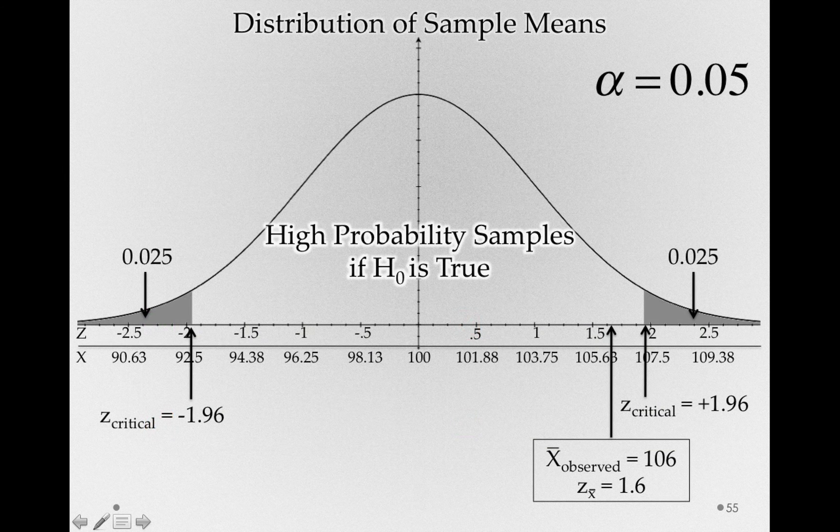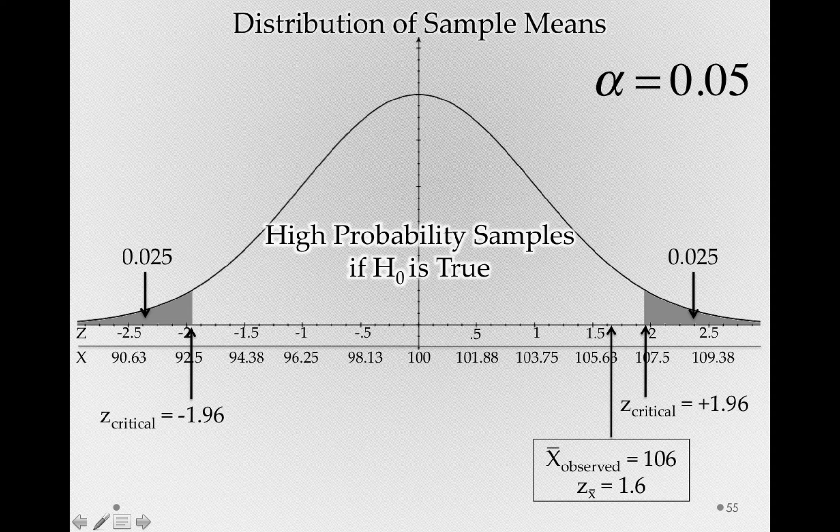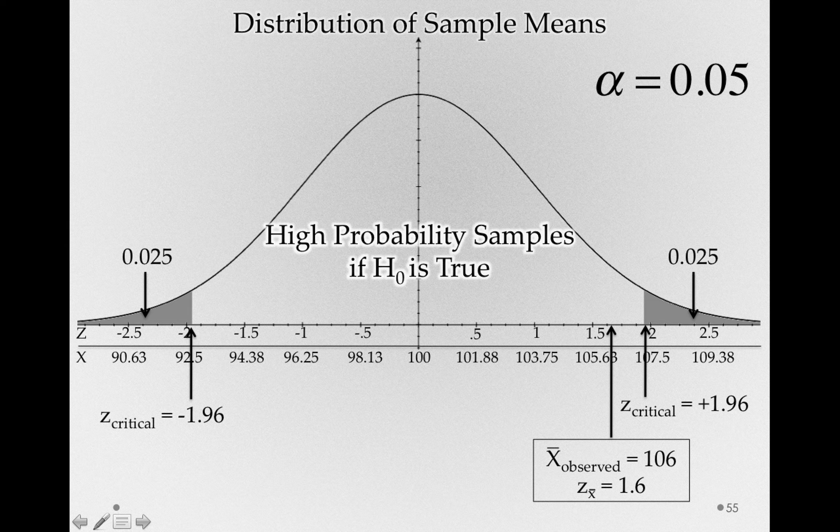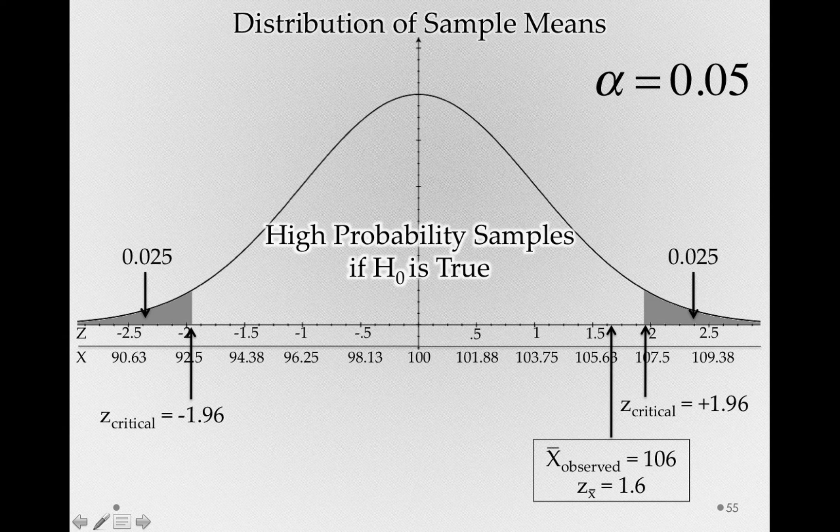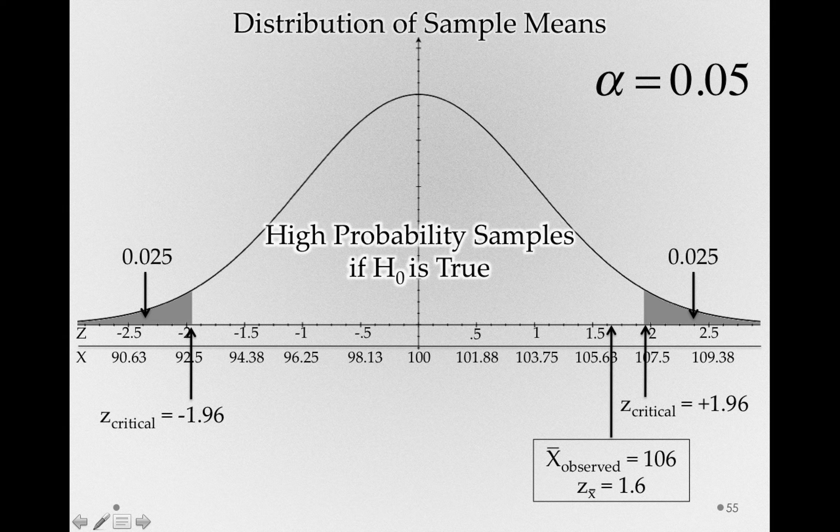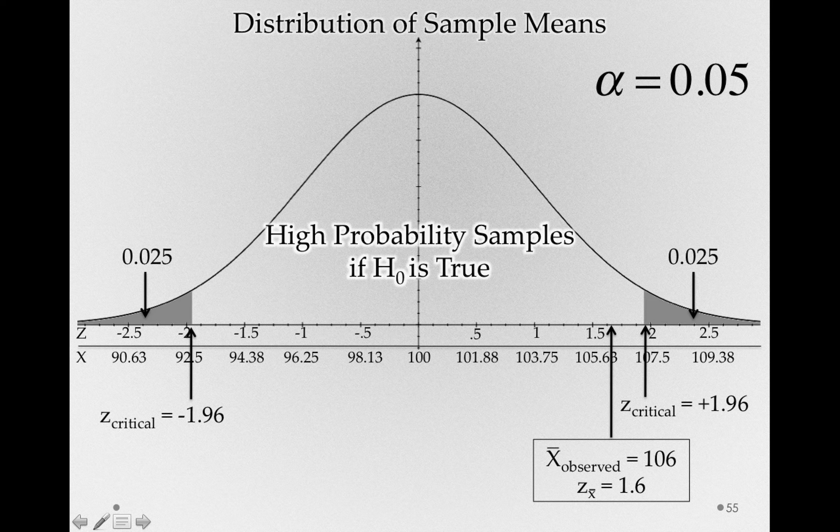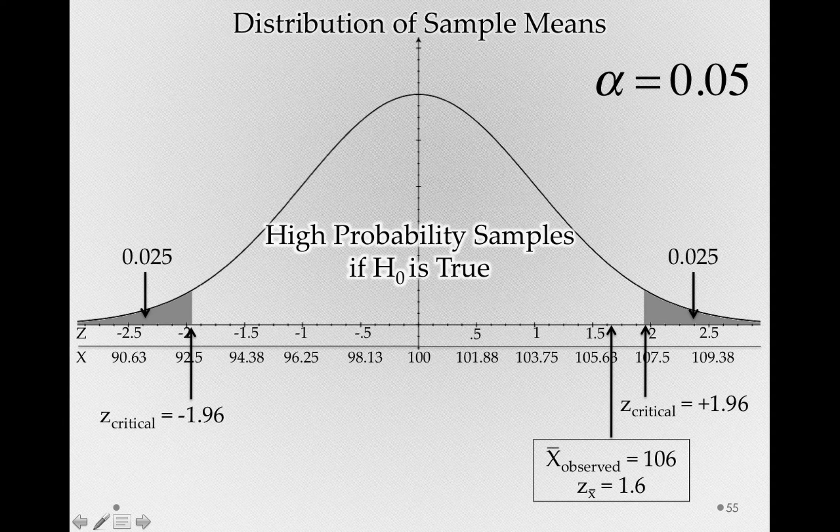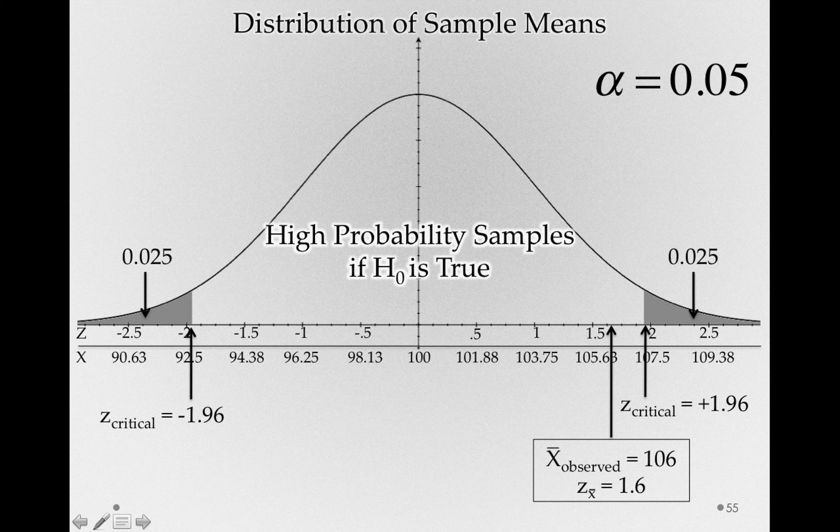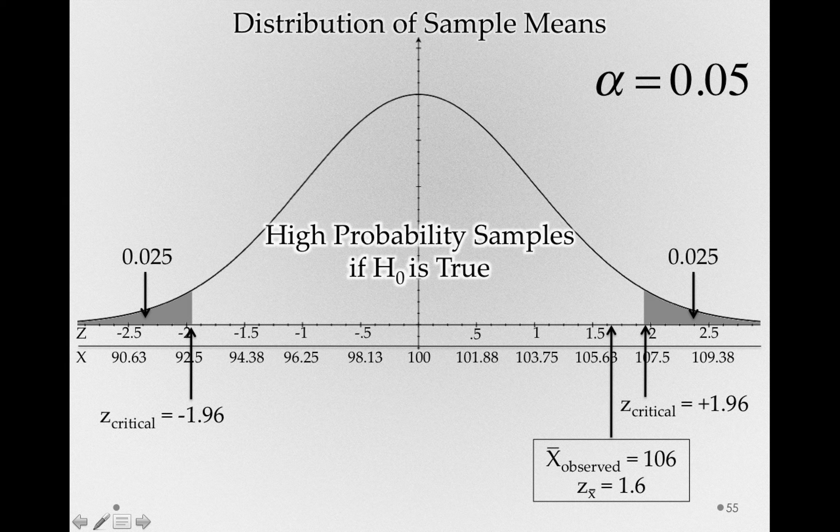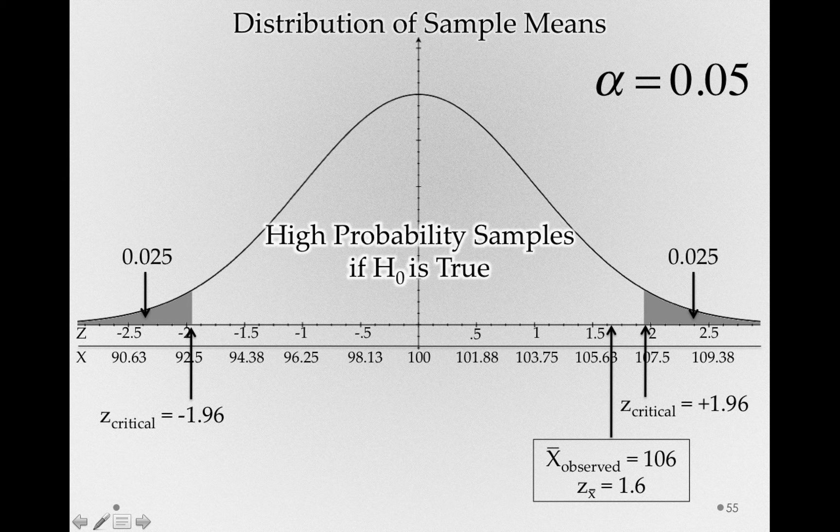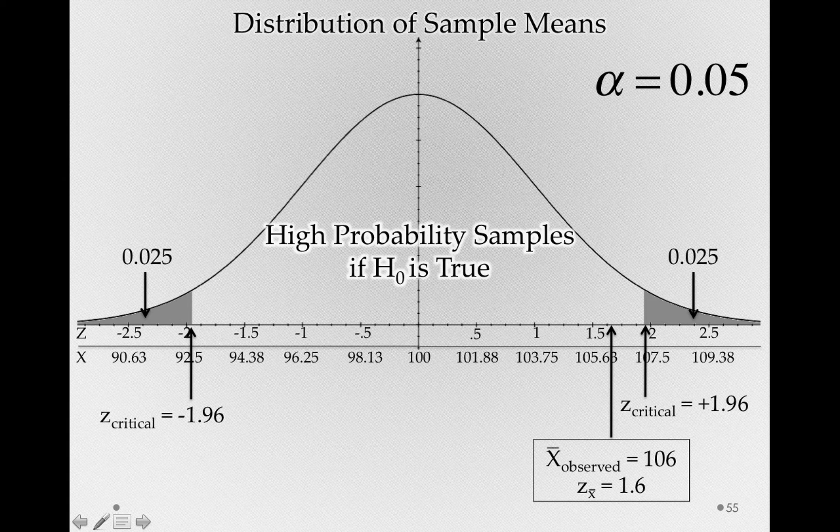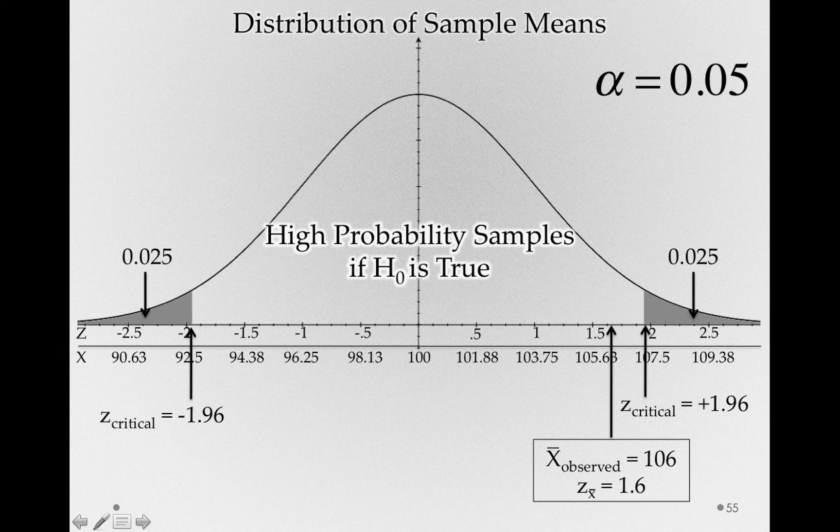Now, let's think about our fail to reject decision. This is what happened in that last study. That is, we got a Z sub X bar that didn't land us in the critical region. How confident should we be in asserting that the null hypothesis is actually true? Now, we failed to reject the null hypothesis. We definitely didn't say we have evidence the null is true. But let's think about why we have to be so specific. Why do we say fail to reject rather than something like accepting the null hypothesis or proving the null hypothesis is true?